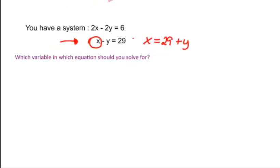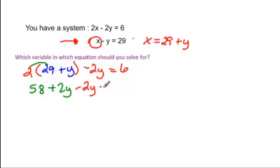We substitute it into the top equation, the other equation. We have 2 times our x, but remember our x is 29 plus y, and then minus 2y equal to 6. So again we have to distribute, so 2 times 29 is 58. 2 times y would be plus 2y, and then minus 2y equals 6.